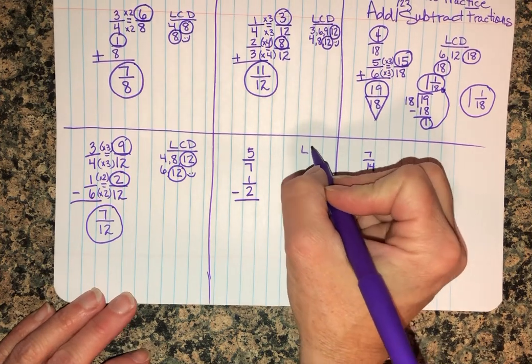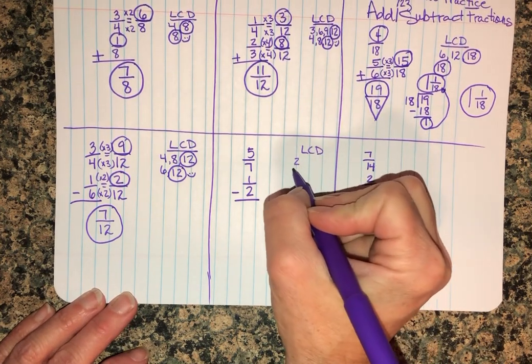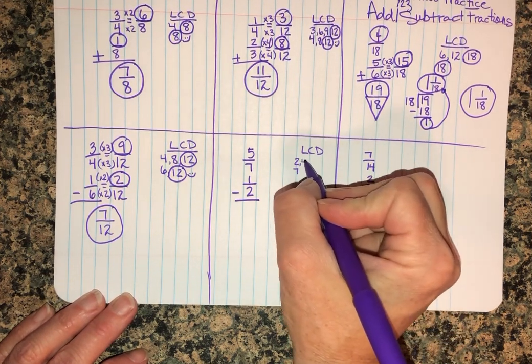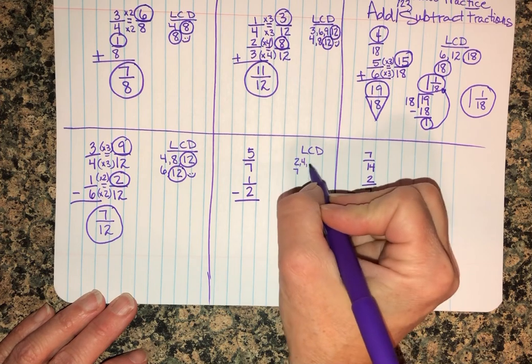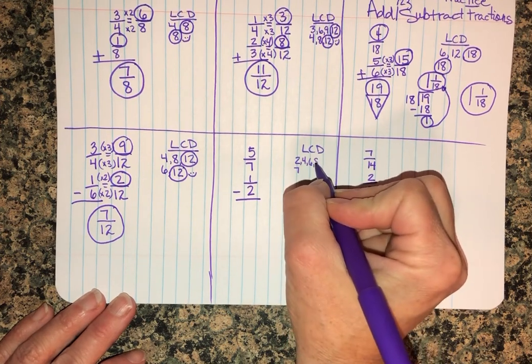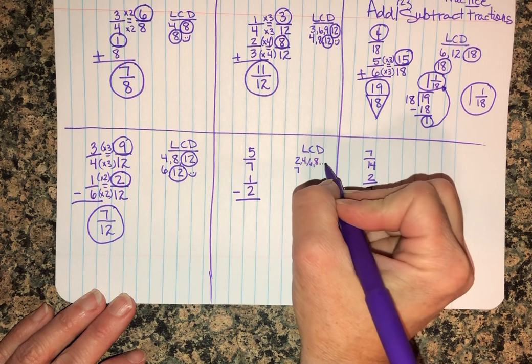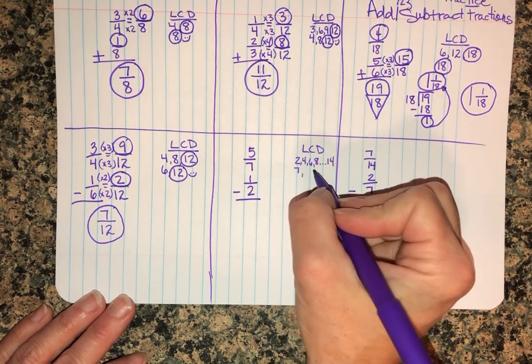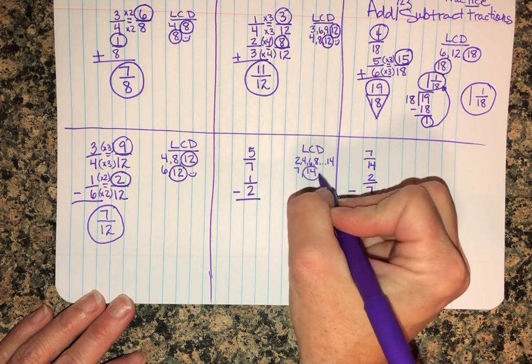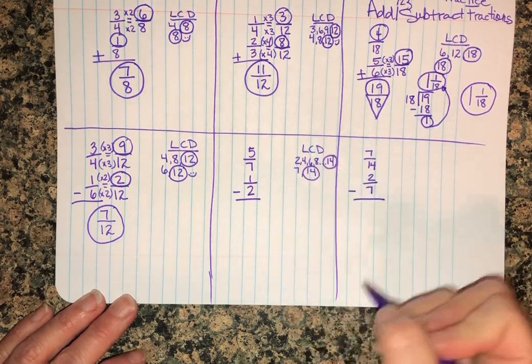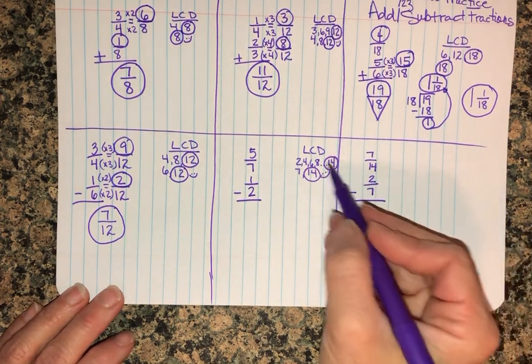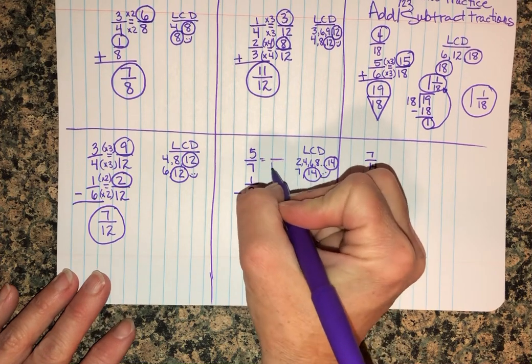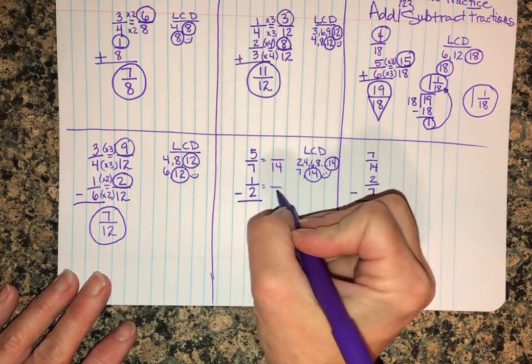On the next one I'm looking for an LCD of two and seven. Two, four, nope. Six, eight - I'm gonna save myself some time here. The only thing that's gonna work with seven is that fourteen. Seven times two is fourteen and it's also a multiple of two. If you see what it is, you don't have to list all of it out. Just go ahead and get to work on creating equivalent fractions.